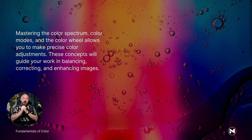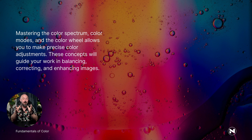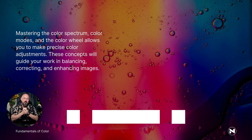Mastering the color spectrum, color modes, and the color wheel allows you to make precise color adjustments. These concepts will guide your work in balancing, correcting, and enhancing images. The one key thing you really need to understand is the color spectrum and what are the opposites of RGB. An easy way to remember: the opposite of RGB is CMY, and the opposite of CMY is RGB. As we dive into the tools of Photoshop, this will become much more clear. Those are the fundamentals of color, and from here the rest of the course shows you what tools to use and how to use them to get the colors you want in Photoshop.